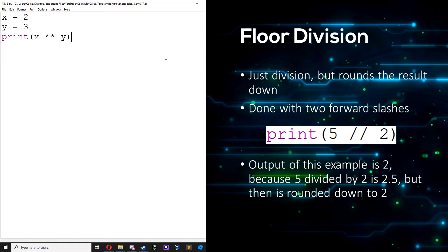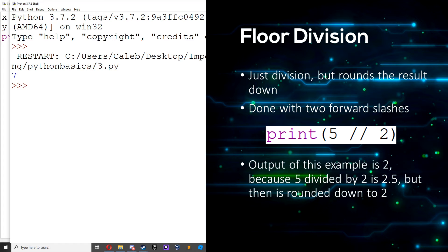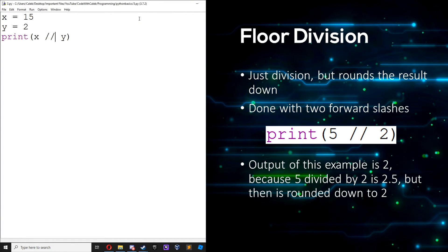And finally we have floor division. Floor division is just division but it rounds the result down to the nearest whole number. So if we change x to 15 and y to 2, we do floor division with two slashes. Save it, run it. We get 7 because 15 divided by 2 is 7.5, and it rounds down to 7.